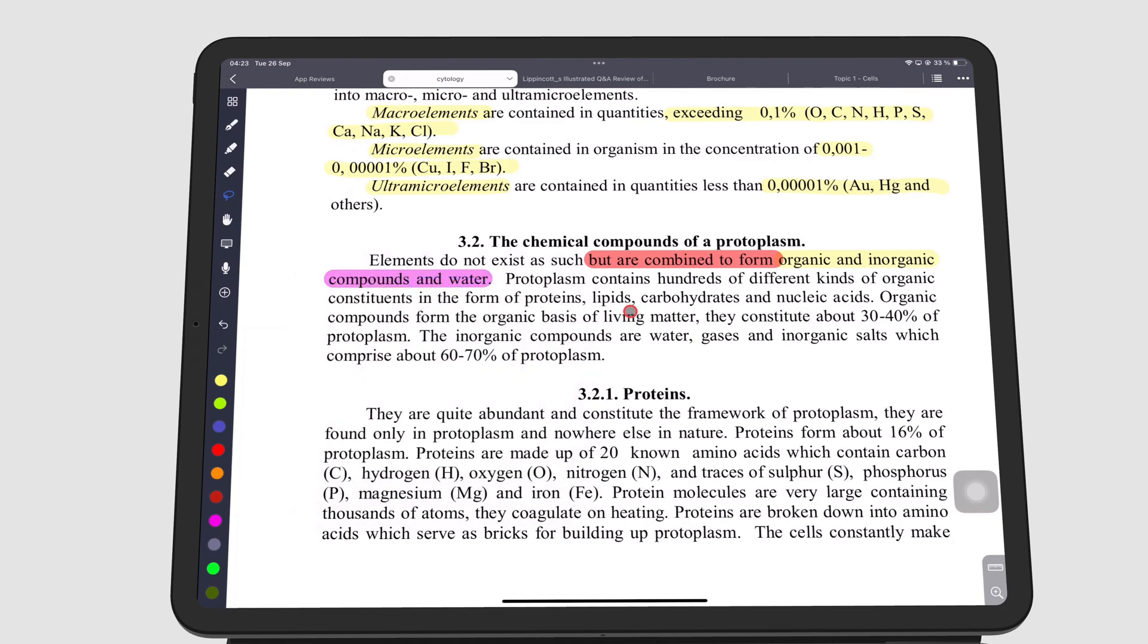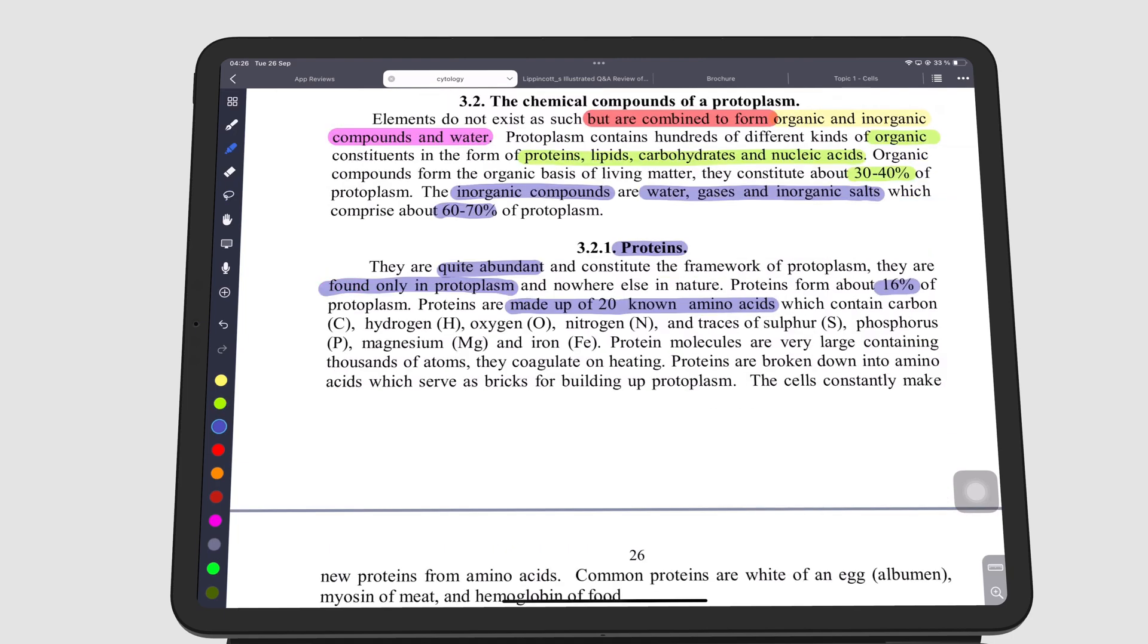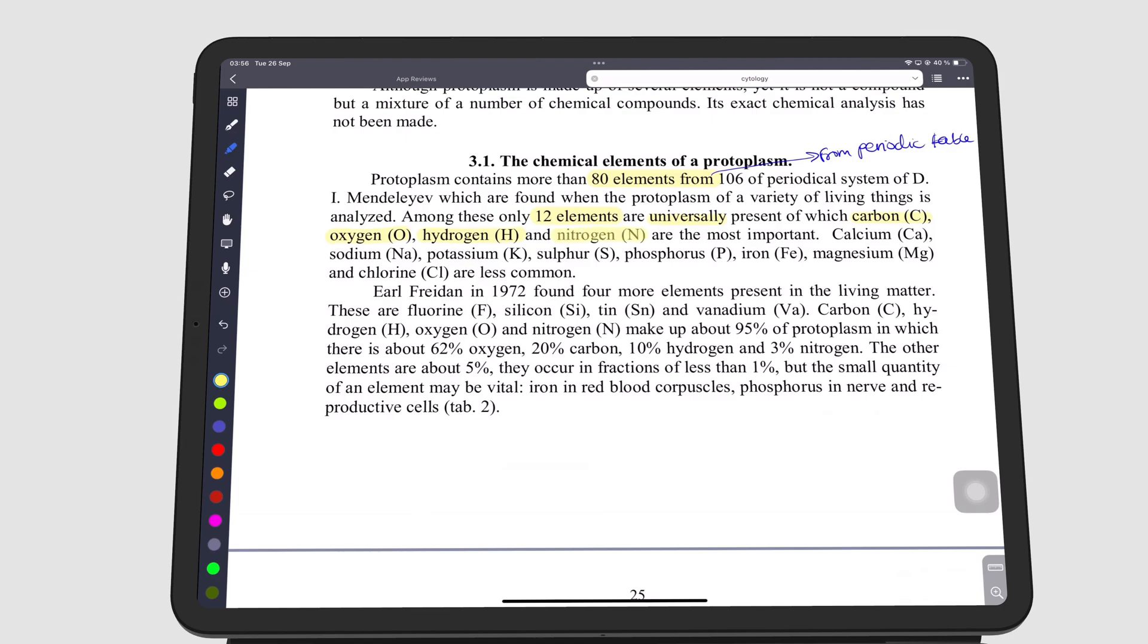By far the easiest way to annotate a PDF is using the handwriting tools in the app. You can use the highlighter tool to highlight and the pen tool to handwrite notes around your PDF.